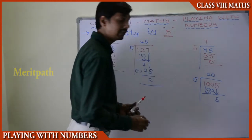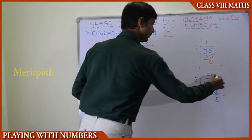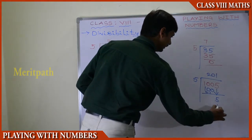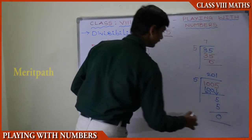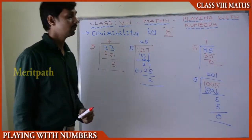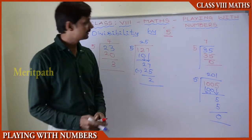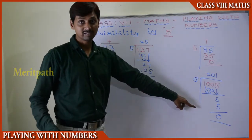Checking the 5 times table: 5 is one time 5, so we get 0 as the remainder. Therefore, 1,005 is divisible by 5 because we get 0 as the remainder.